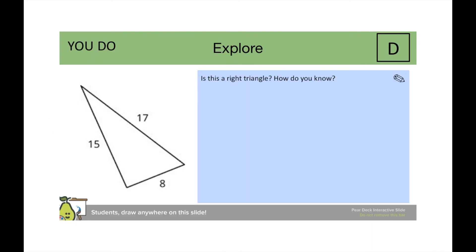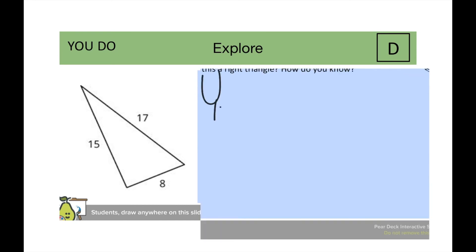For the you do, students are asked, is this a right triangle, how do you know? And the answer is yes, because if students do eight squared plus fifteen squared equals seventeen squared, they will get sixty-four plus two hundred twenty-five equals two hundred eighty-nine.